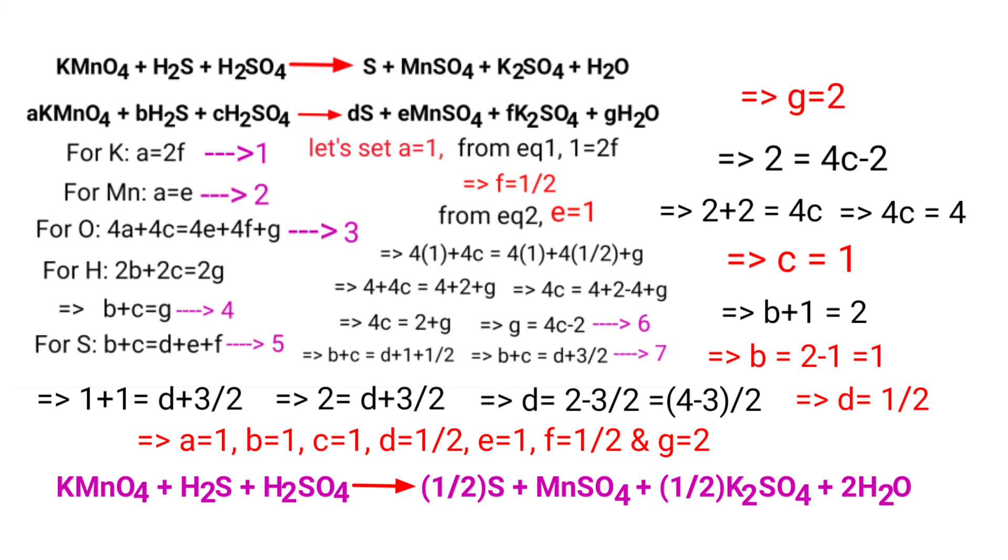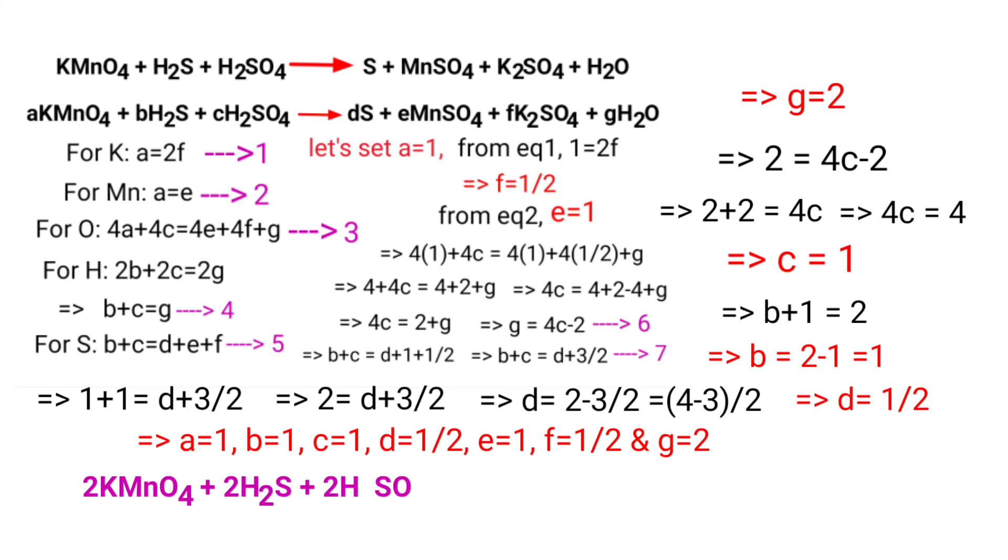In this equation, 1/2 is a rational number. We don't use rational numbers for a molecule, so to get whole numbers, we need to multiply the equation by a coefficient of 2. So 2 KMnO4 plus 2 H2S plus 2 H2SO4 gives us S plus 2 MnSO4 plus K2SO4 plus 4 H2O. The equation is now balanced.